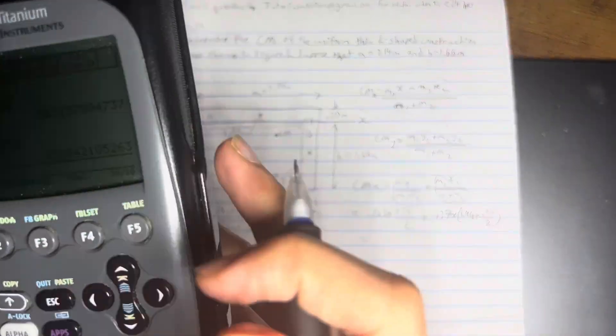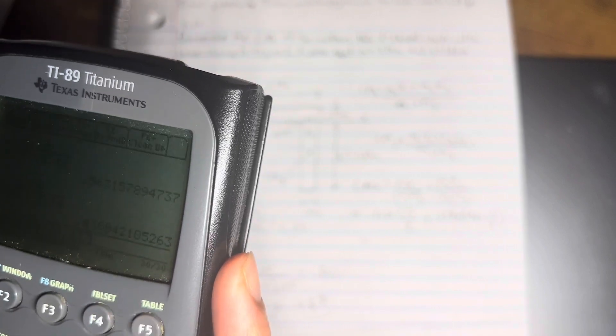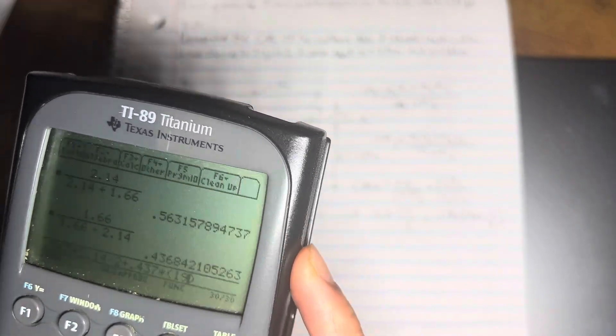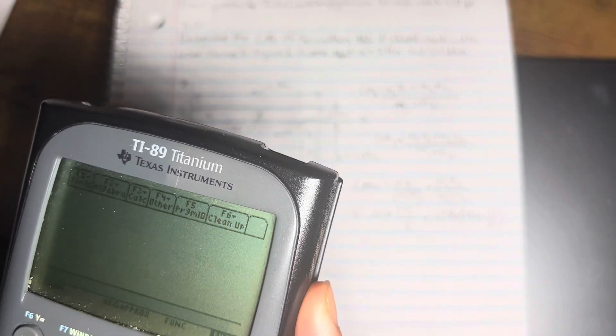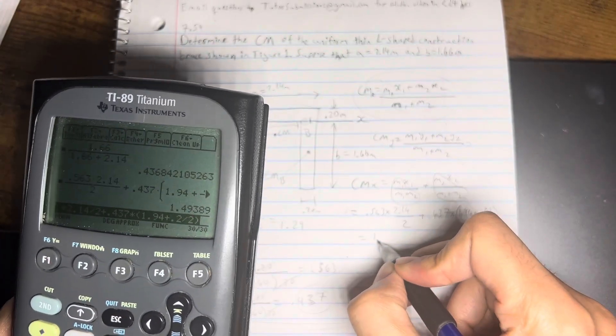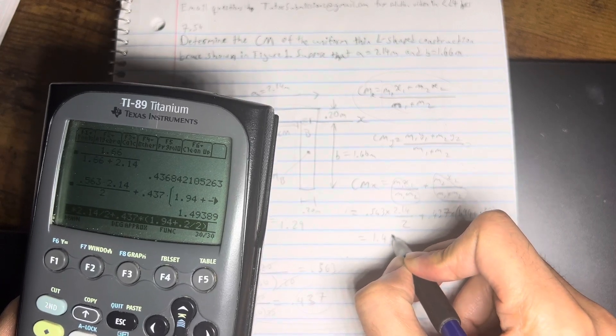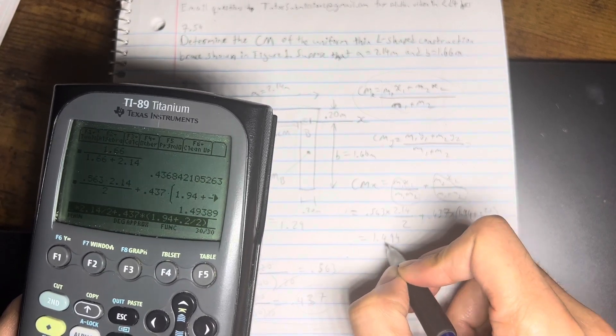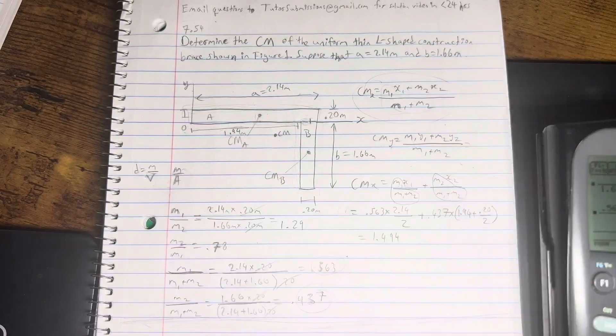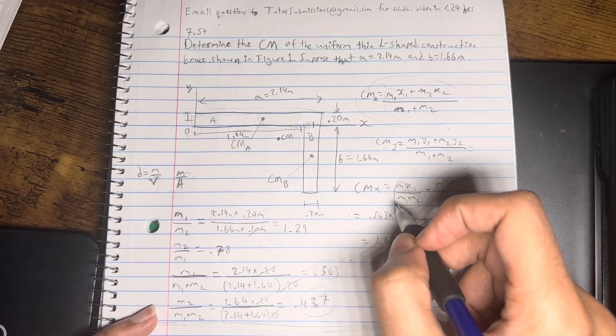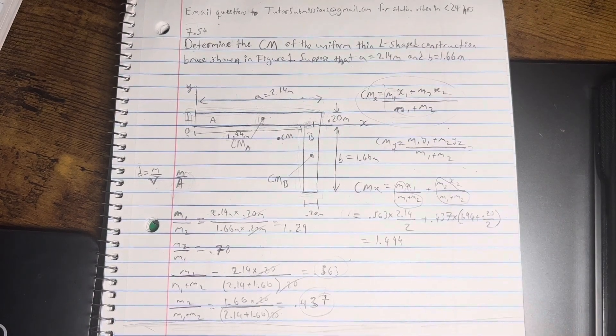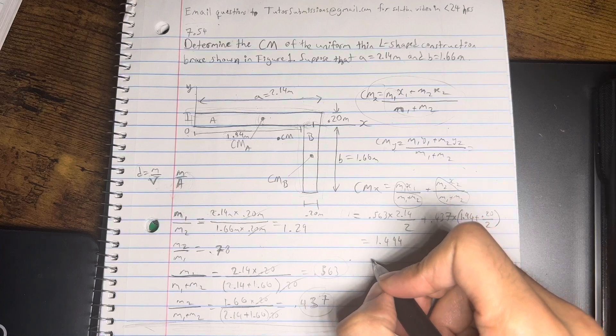All right. So, I get 1.494. Okay. So, that is going to be our x-coordinate for the center of mass of the whole brace. And so, now we're going to do more or less the same thing with the y-coordinate.